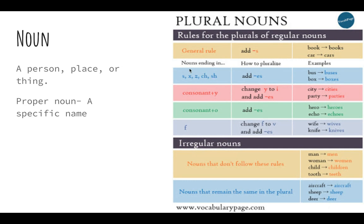If a noun ends in S, X, Z, CH, or SH, you would have to add E-S — like bus becomes buses, box becomes boxes. If you have a consonant plus a Y at the end, you change the Y to I-E-S. So 'city' would be 'cities,' 'party' would be 'parties.' You can't just add an S to the end if there's a Y.